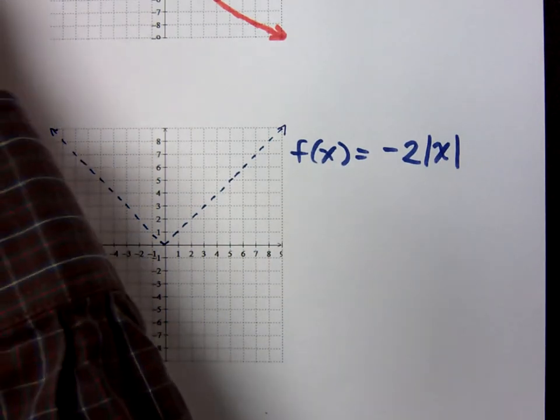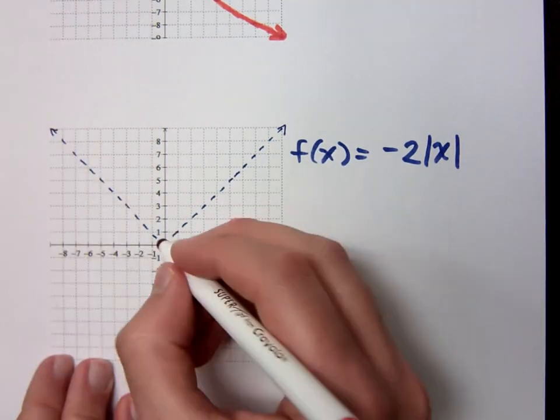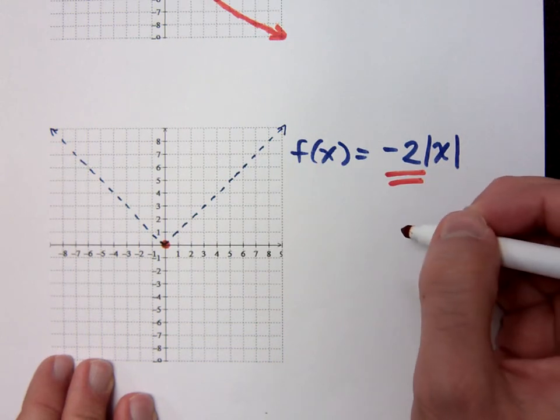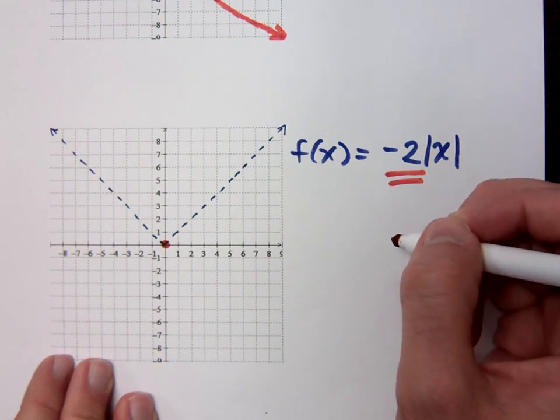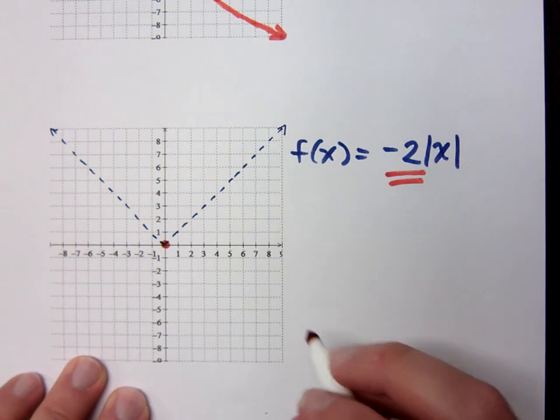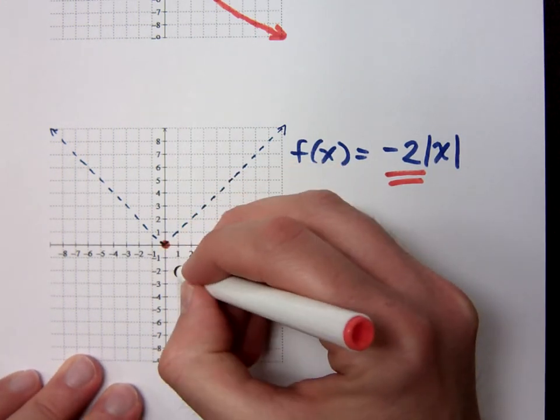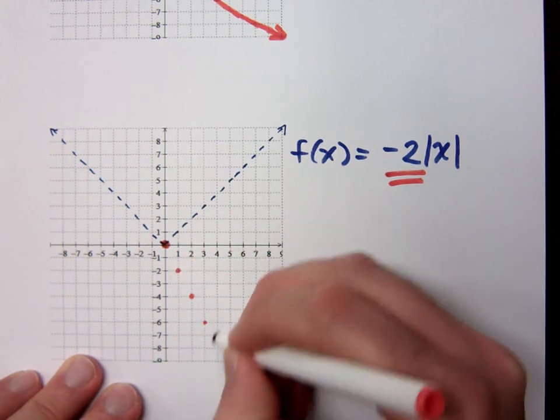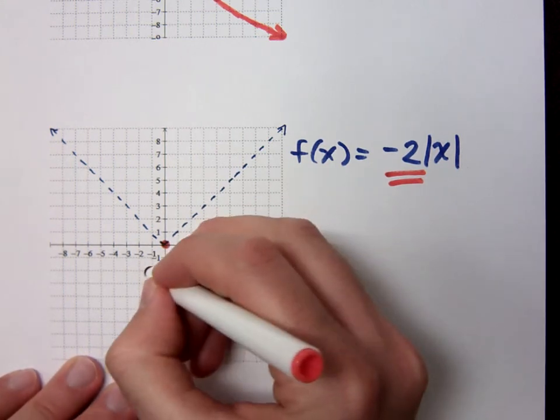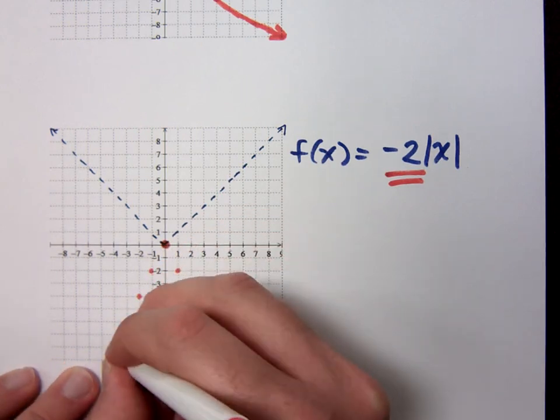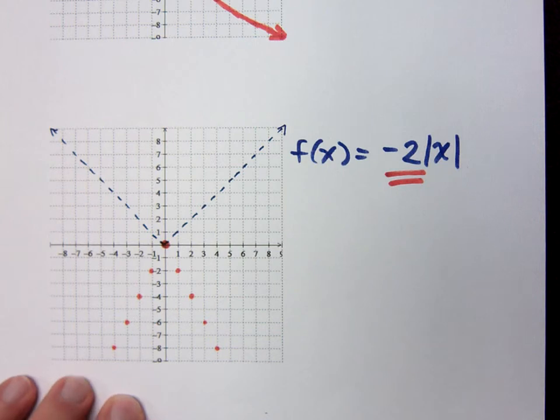We already know our key shape right here. I said that this guy is going to open down, but he's not moving up, down, left, or right. But he's got this negative 2 right here, so you can treat that like a slope only because you have straight pieces here. So that means you're doing what? Down 2 over 1, down 2 over 1, and so on. Get these key points. And you connect the dots.